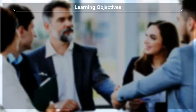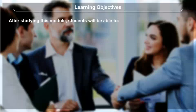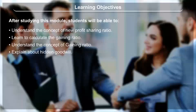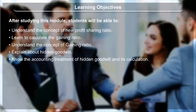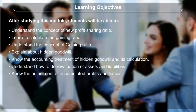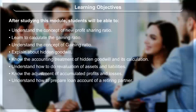Learning Objectives: After studying this module, students will be able to understand the concept of new profit sharing ratio, learn to calculate the gaining ratio, explain about hidden goodwill, know the accounting treatment of hidden goodwill and its calculation, understand how to do revaluation of assets and liabilities, know the adjustment of accumulated profits and losses, understand how to prepare the loan account of a retiring partner, and prepare the balance sheet of a reconstituted firm.